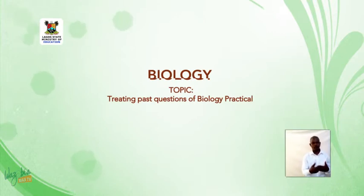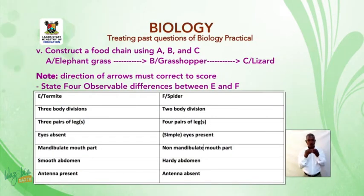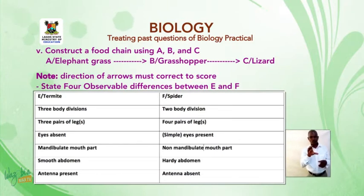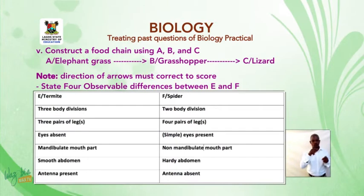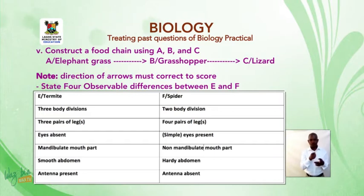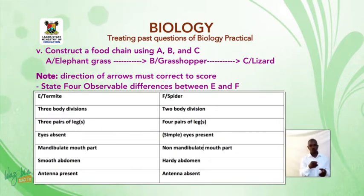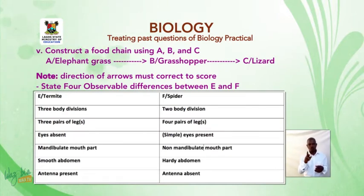Welcome back. Construct a food chain using A, B, and C. A is elephant grass, B is grasshopper, and C is lizard. The food chain must be: elephant grass, followed by grasshopper, then lizard. Note: the direction of arrows must be correct to score.